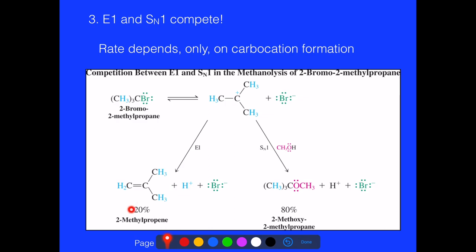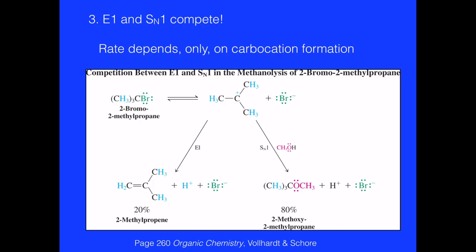The 20% elimination is actually fairly typical — and probably even a bit high. E1 reactions tend to be minor; it's almost like a contaminant in these reactions. You really can't get E1 to be the primary product in these conditions, and it usually stays around 80% SN1 except in really unique molecules or circumstances.